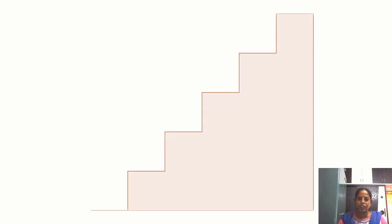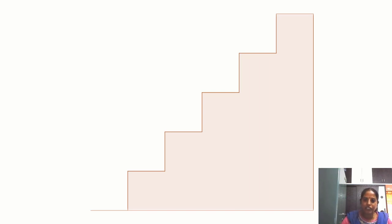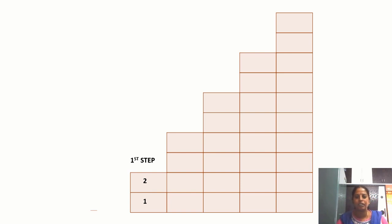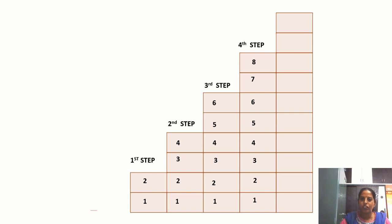Let us understand sequence by taking an example from our daily life. I think all of you have seen a staircase. People use staircases to reach the first floor, second floor. How is this staircase related to arithmetic progression? If I remove the plastering of the staircase, we observe the bricks used to build the steps. The first step uses two bricks, the second step uses four bricks, the third step uses six bricks, and the fourth step uses eight bricks.